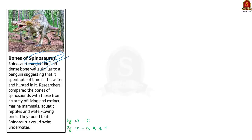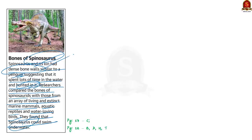Now we will move on to the next news article about spinosaurus. It has been found that the spinosaurus and its skin had dense bone walls, similar to a penguin, suggesting it spent a lot of time in water and hunted in it. Researchers compared the spinosaurus bones with an array of living and extinct marine mammals, aquatic reptiles, and water-loving birds, and found that the spinosaurus could swim underwater. In this context, let us discuss about the spinosaurus in a prelims perspective.